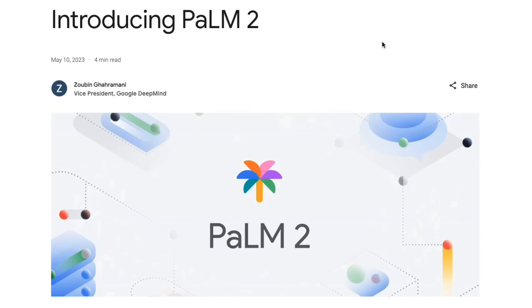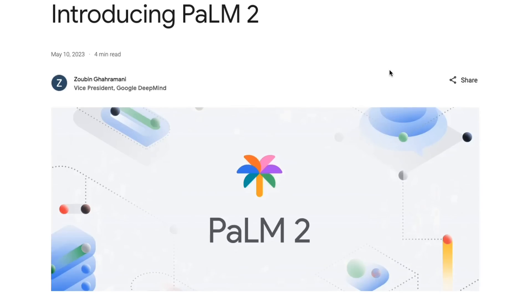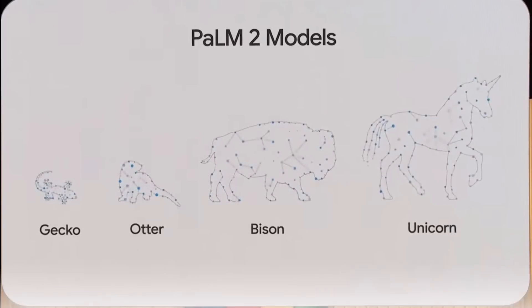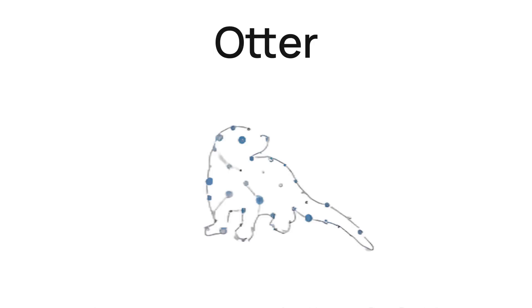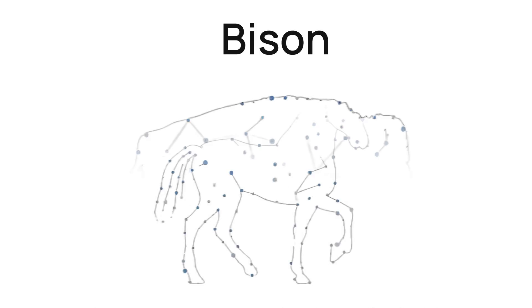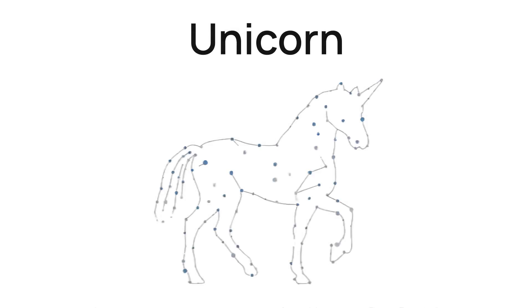The PaLM 2 series of models was officially released on May 10th at Google I/O this year. There are four main sizes: Gecko, which is aimed at mobile devices; Otter, which is a bigger but still reasonably small model; Bison, which we're going to be using today; and Unicorn, which Google hasn't really made public so far.